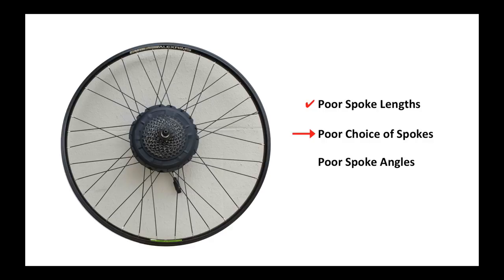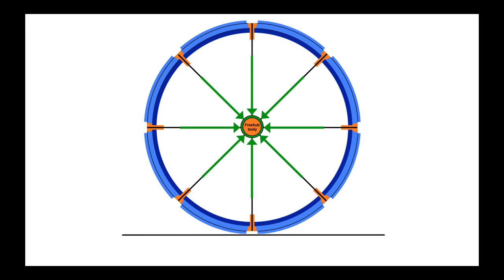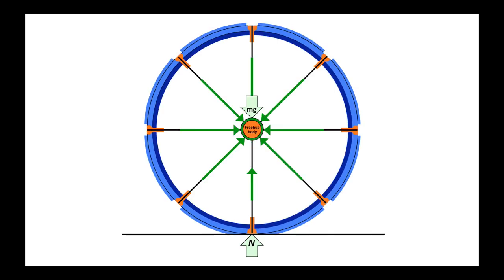Now let's talk about the choice of spokes. Here is a picture of a wheel with no load on it. But when there is a load on it, the spoke at the bottom, as it goes through the load-bearing zone, the rim bends up slightly, the spoke becomes slightly shorter, and the tension decreases.